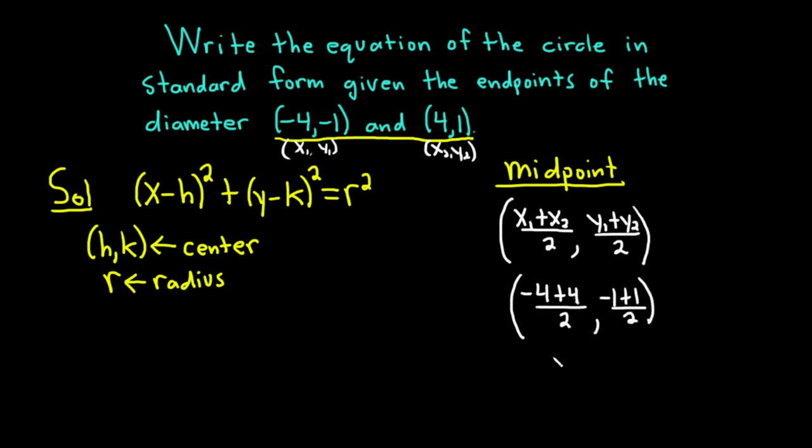(-4) + 4 is 0, so we end up with 0/2. (-1) + 1 is 0, so we end up with 0/2. So 0/2 is 0, we get (0, 0). So our center is (0, 0) in this case.